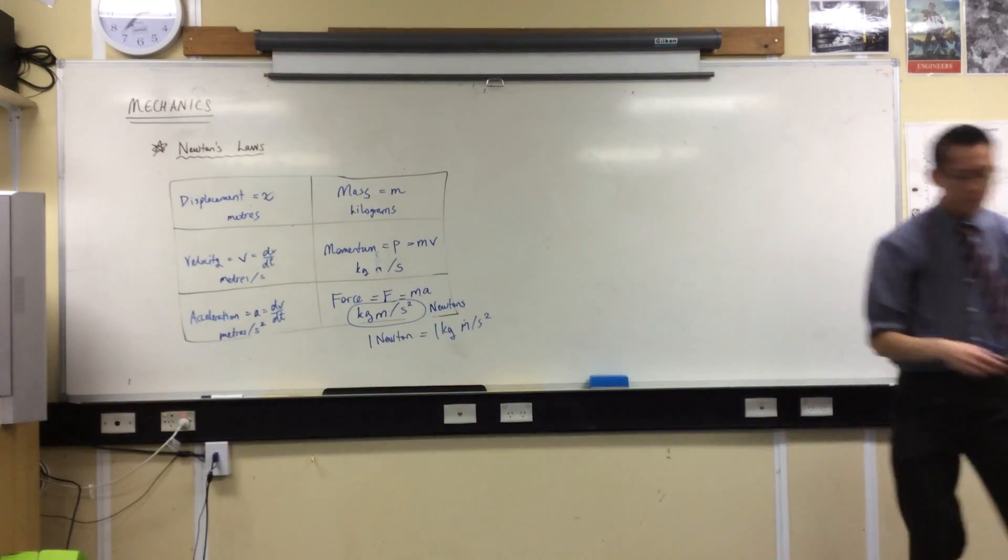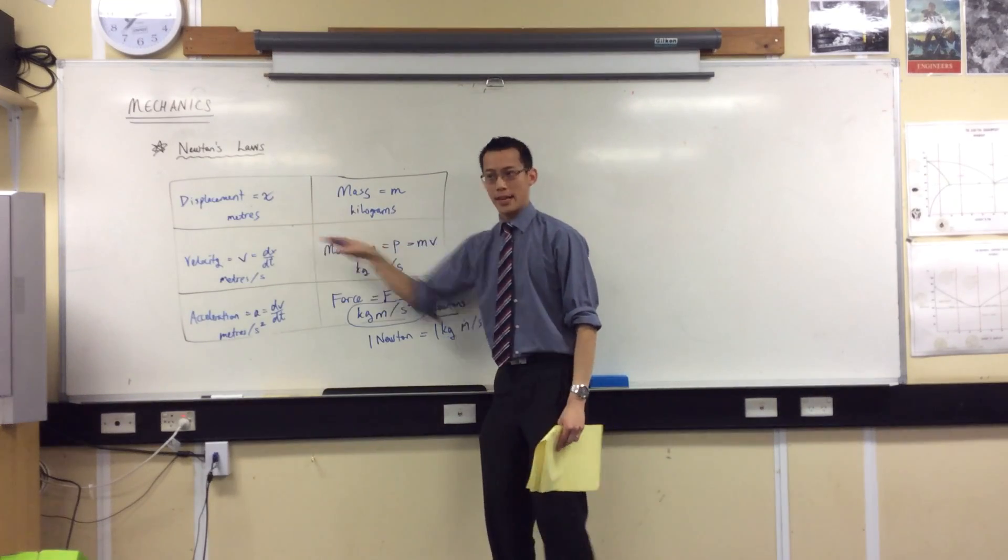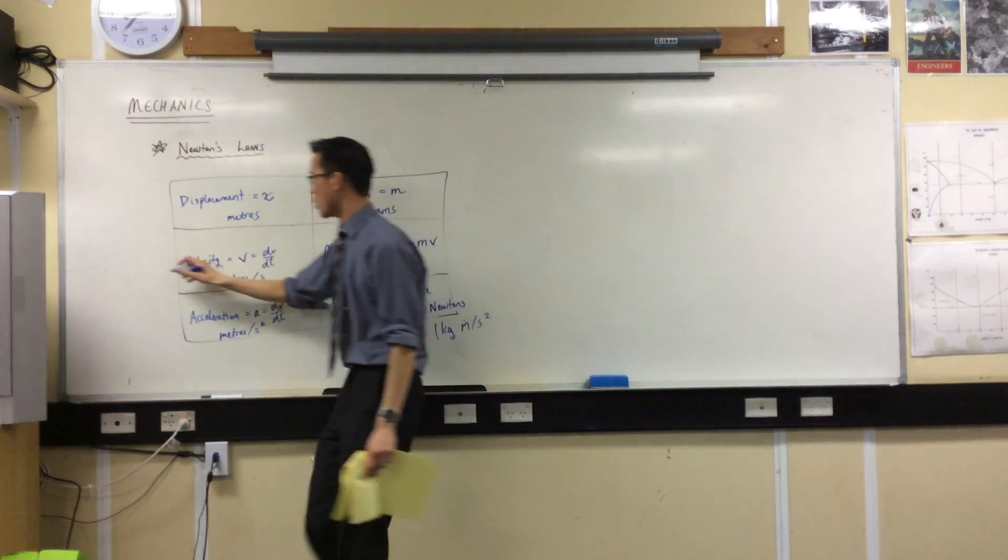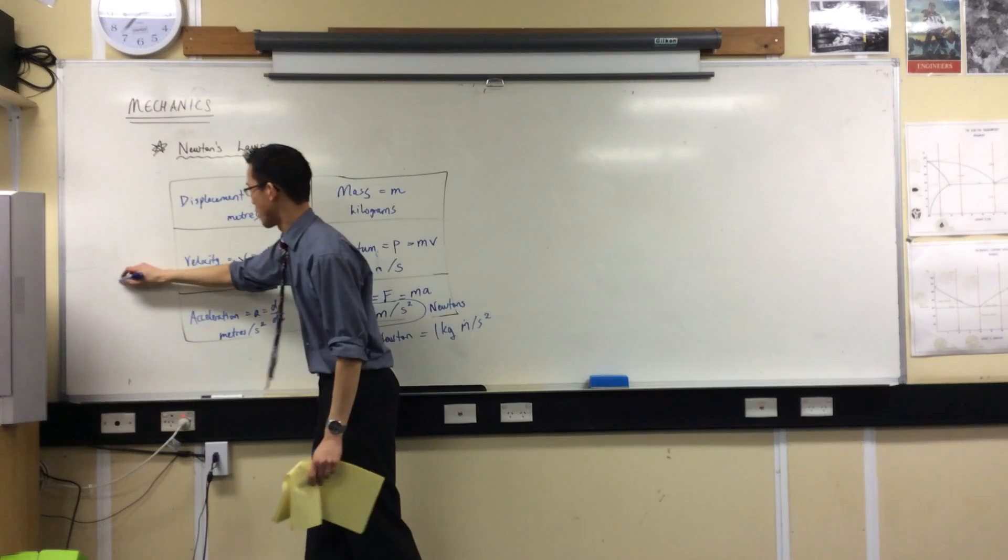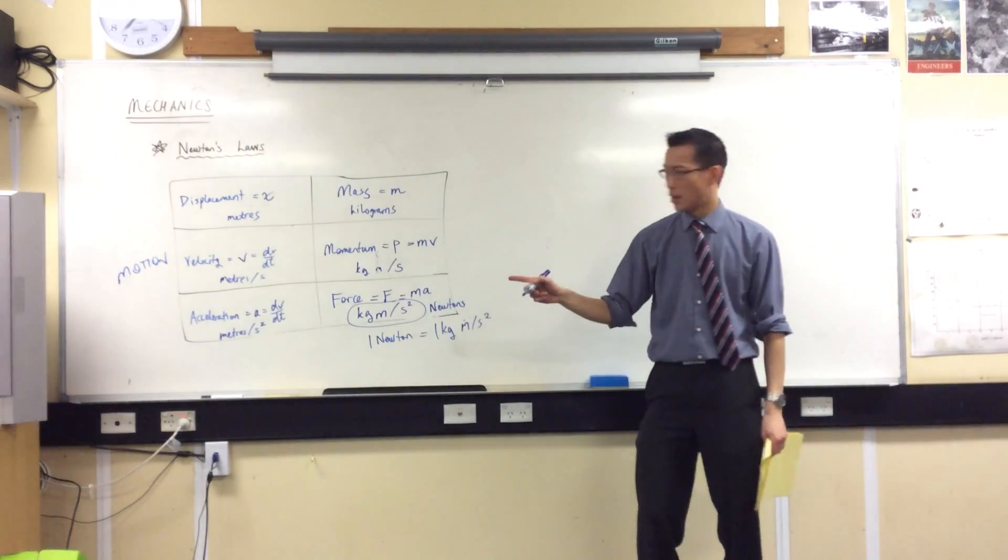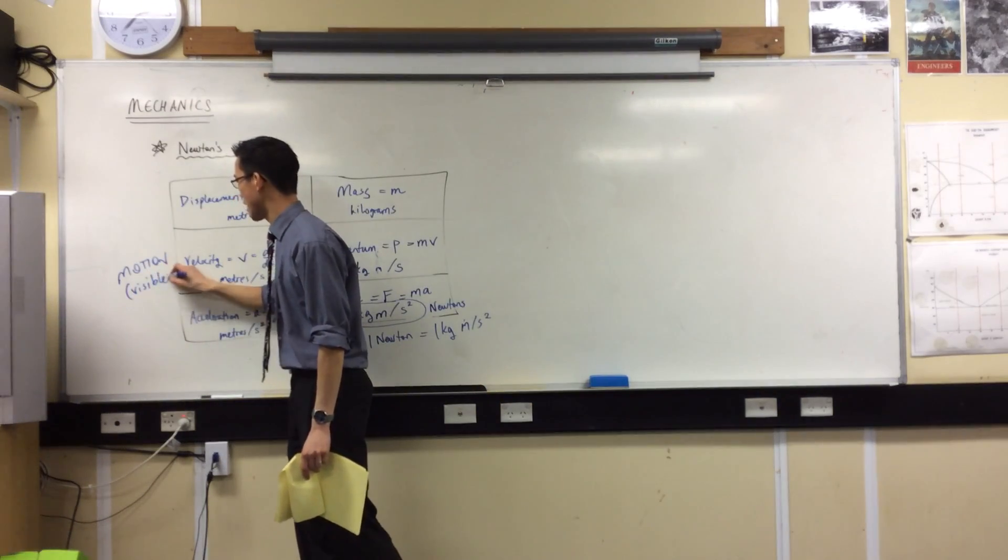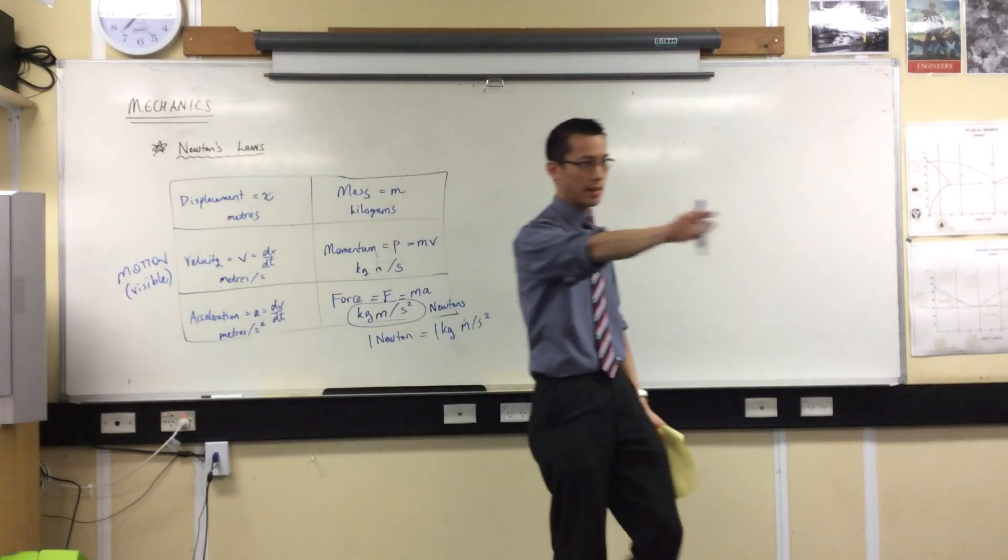Now, just before I leave off this, some interesting things. When you look at this row in here, this is the motion row. This is how something is moving. You can see motion, it's a visible thing. If something is moving in front of you, you can see it happening.